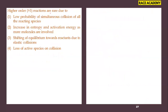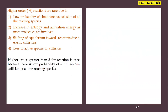Higher order reactions (greater than 3) are rare. Why? Because of the low probability of simultaneous collision of all the reacting species. More than three species colliding simultaneously is simply not possible in practice. So the first option — low probability of simultaneous collision of all reacting species — is the right answer.